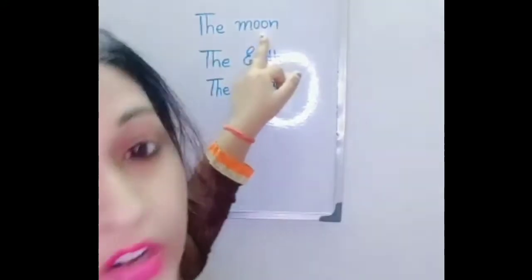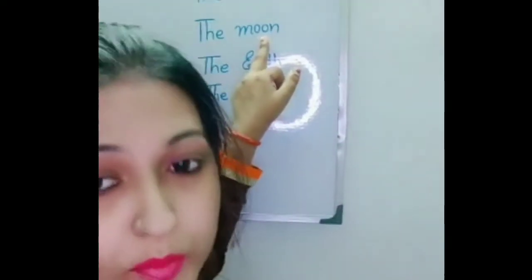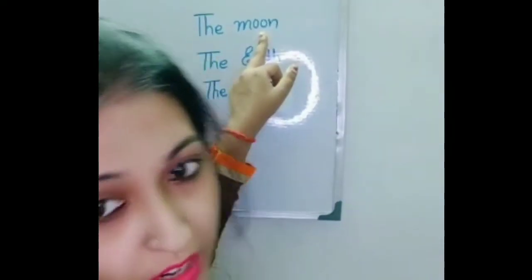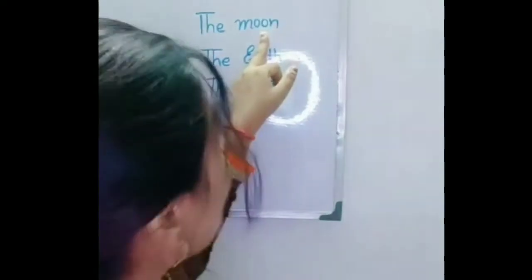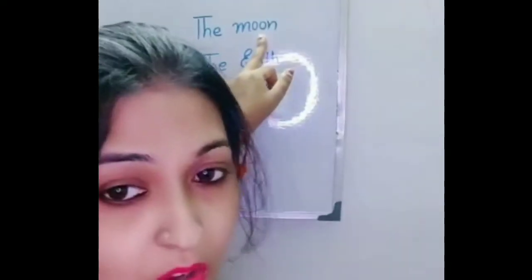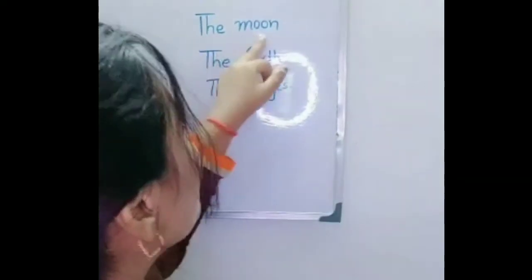Moon is also a one and only object. There is no other moon in our earth. So we can use article 'the' — we can say 'the moon'.